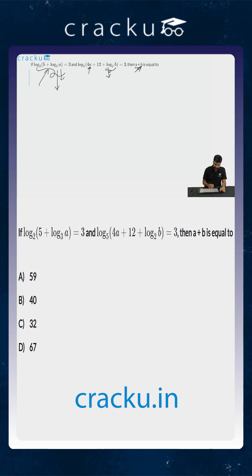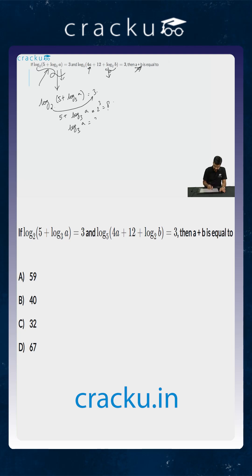Let us first simplify the first equation. It says that log base 2 of (5 plus log base 3 of A) is equal to 3. Removing the logarithm, 5 plus log base 3 of A equals 2 cubed, which is 8. So log base 3 of A equals 8 minus 5, which is 3, giving us A equals 3 to the power 3, which is equal to 27.